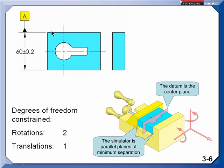So I need to grab it or close in on this with two parallel planes at minimum separation. Now that would be the unrelated actual mating envelope. In practical terms, it might be an inspection vise. And then by indicating off the faces of the jaws of the vise, I can determine where a center plane would be.